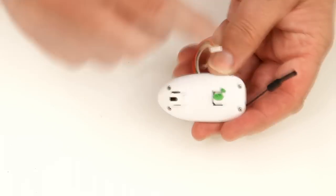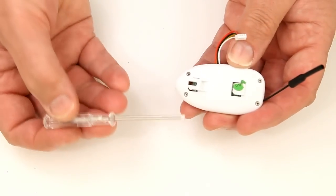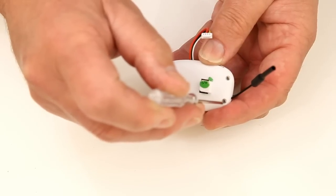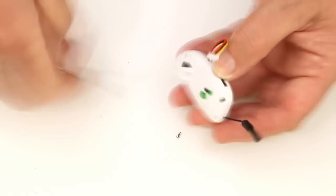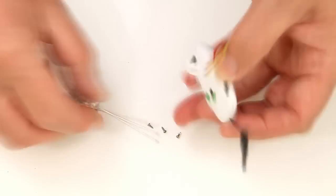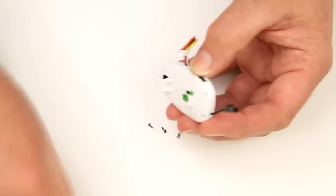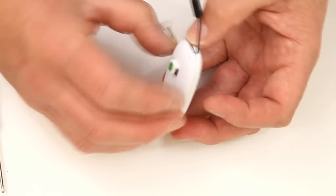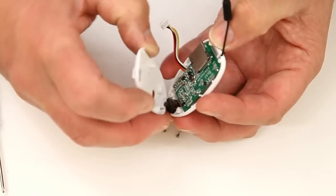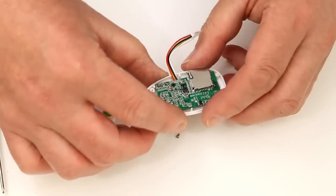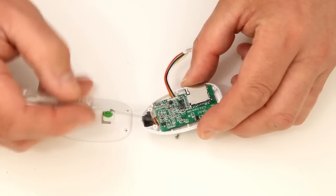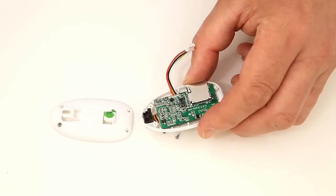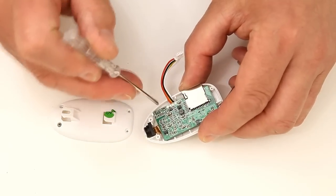There's four screws we've obviously got to take out with our trusty Phillips screwdriver. That little mini one just comes off nice and easy. There we go, and this is the bit we're going to be replacing, so obviously we need to turn the board over and get to the other side. There's one screw just here.